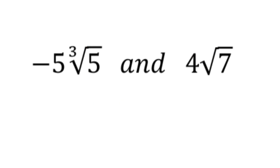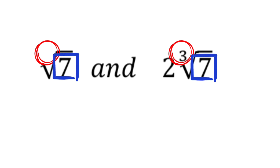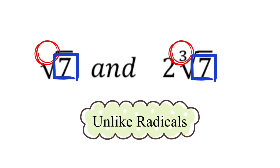Now let's move on to the next one. We have a square root of 7 and 2 times the cube root of 7. Their indices are not the same — one index is an invisible 2 while the other is 3. Although we have the same radicand of 7, both the indices and the radicands must match up. Since the radicands match but the two indices do not, we say that this is an unlike radical.